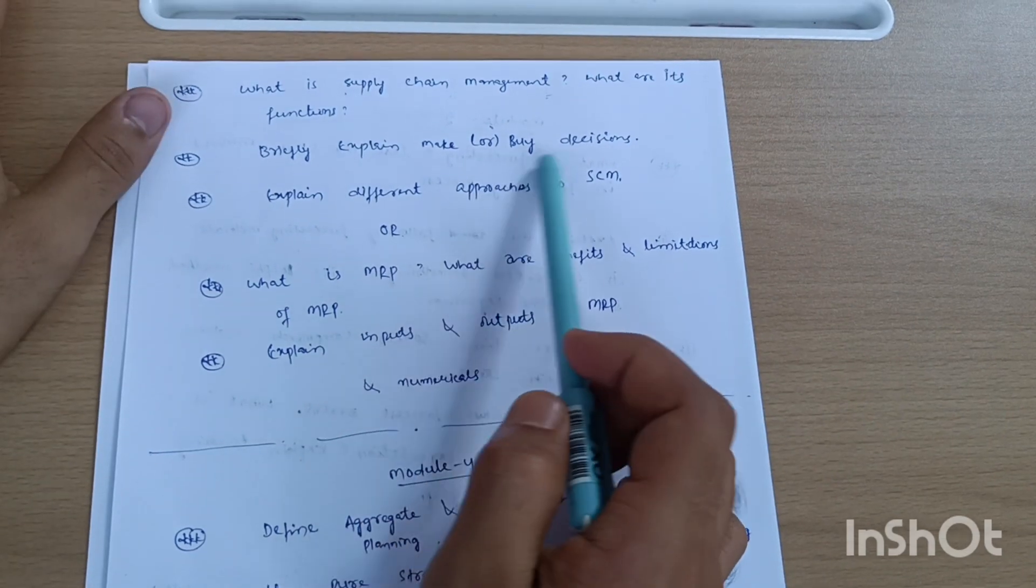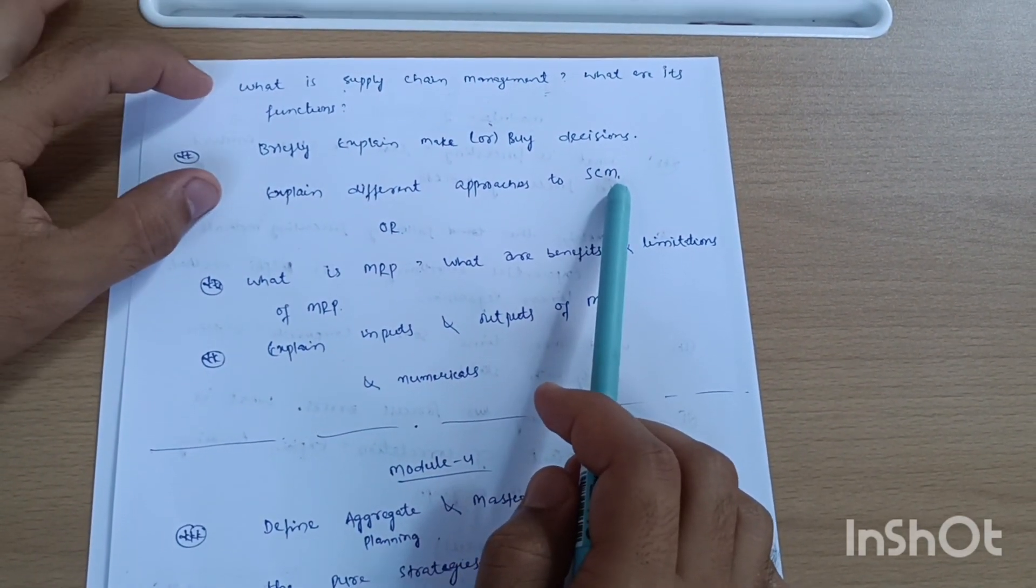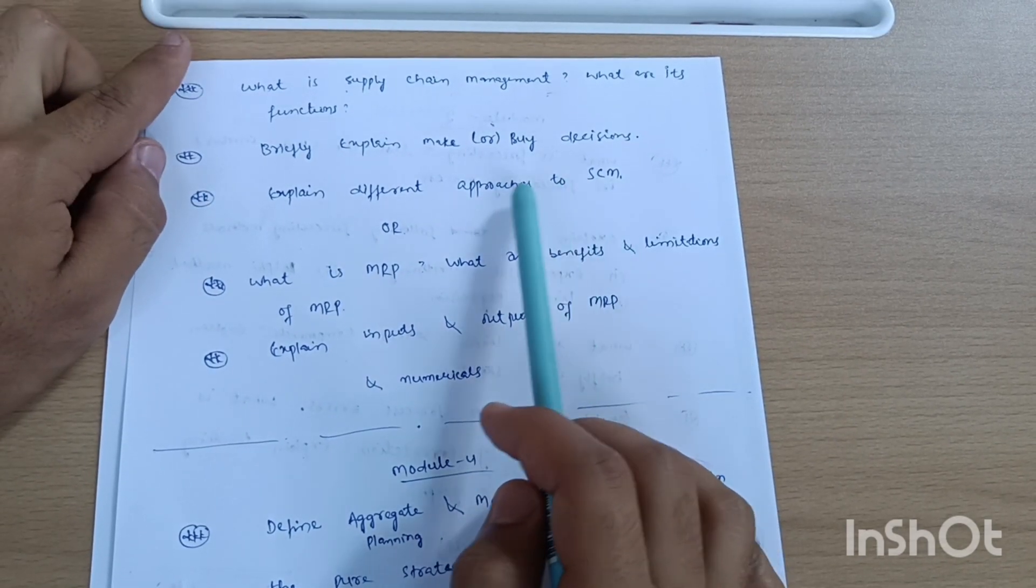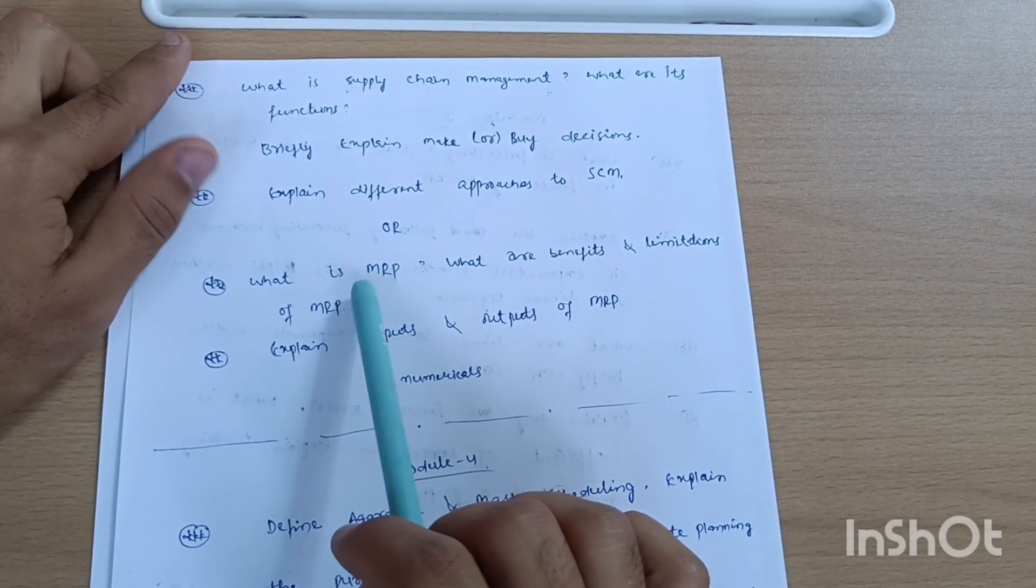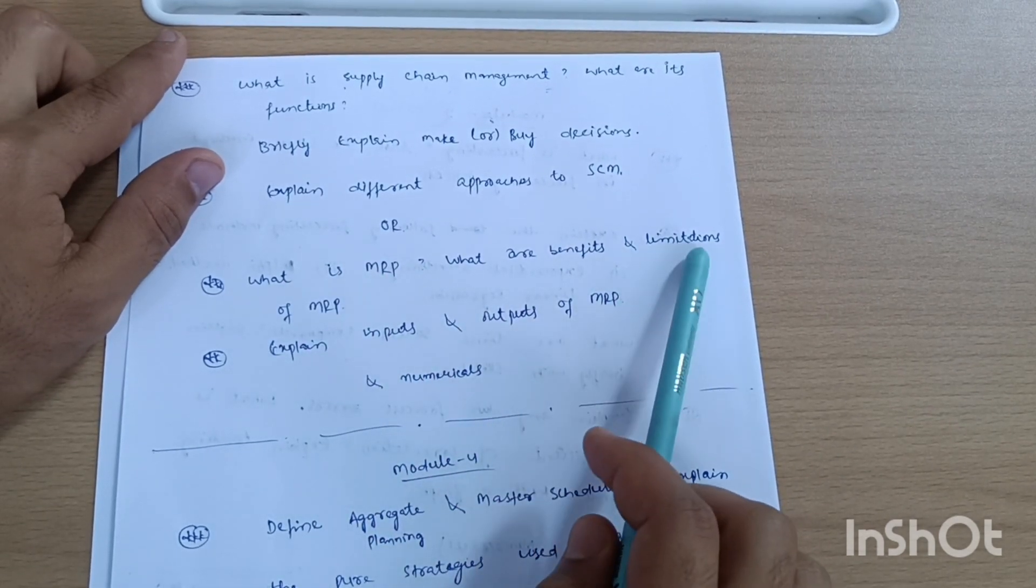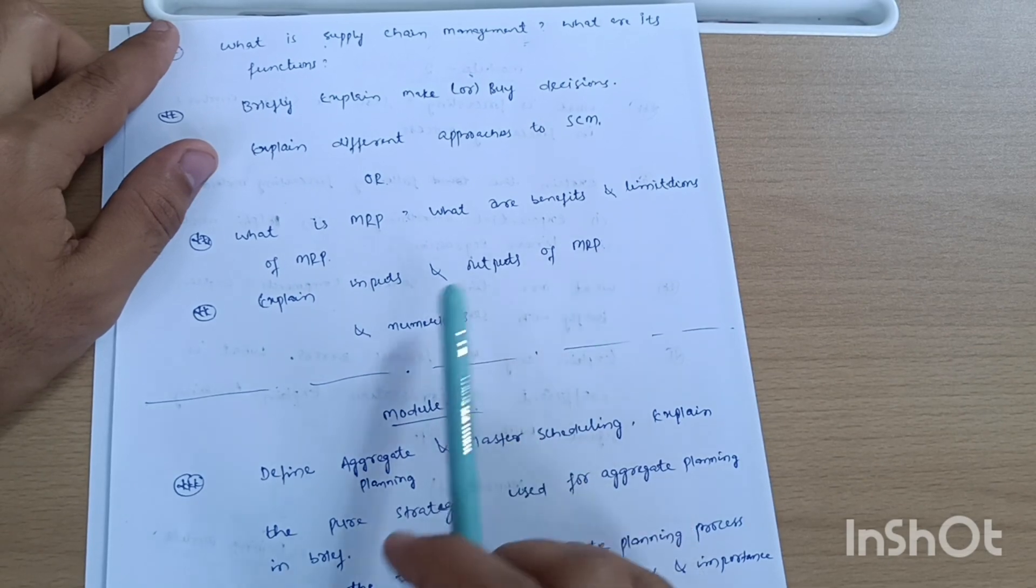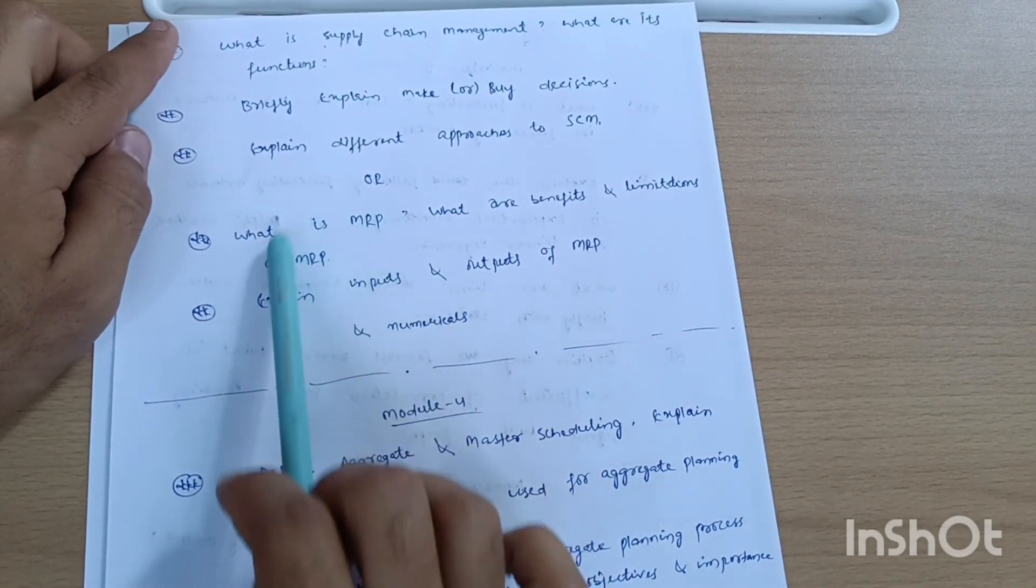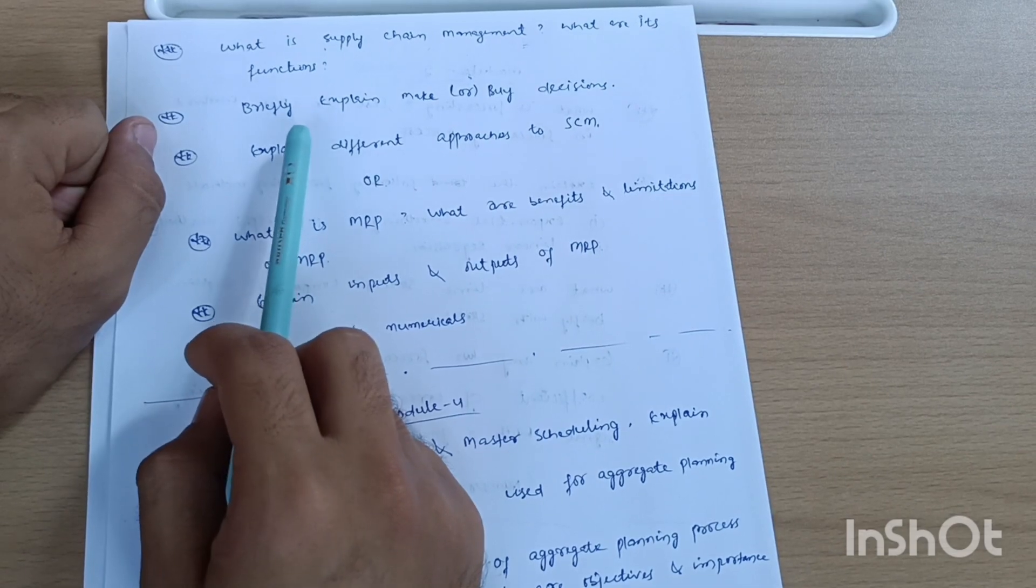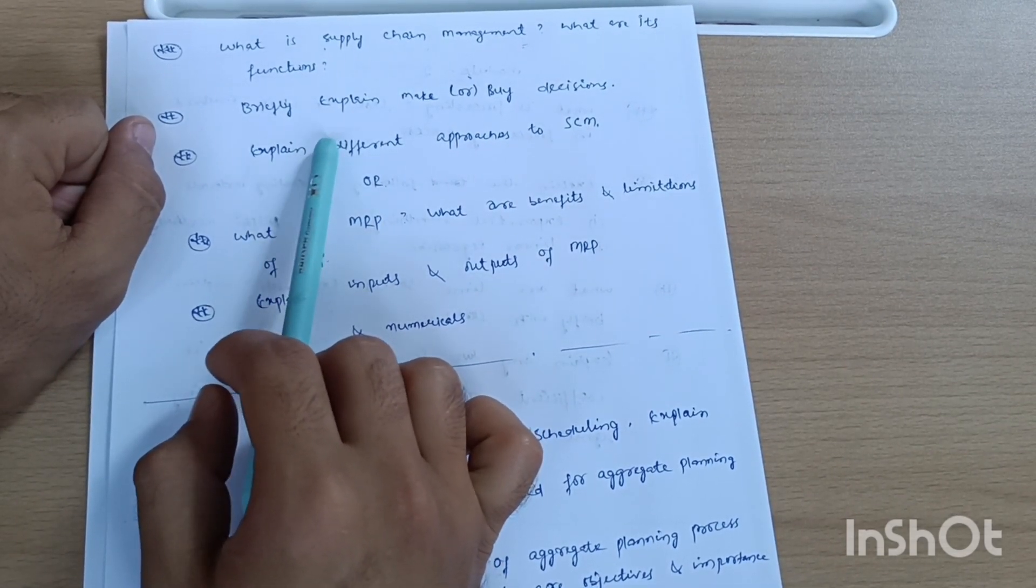Briefly explain make or buy decisions, expand different approaches to SCM. This is one part of Module 5. You can go through one part in Module 5 if you are convenient with the OR part, in which you have to cover MRP. What is MRP, what are benefits and limitations of MRP, and explain inputs and outputs of MRP. Some numericals are attached with the MRP part, so better to go for the OR part which is purely based on theoretical portions.